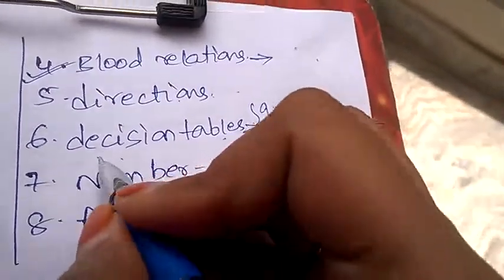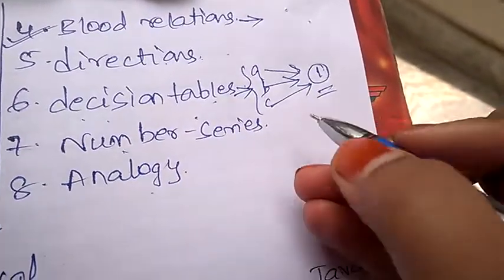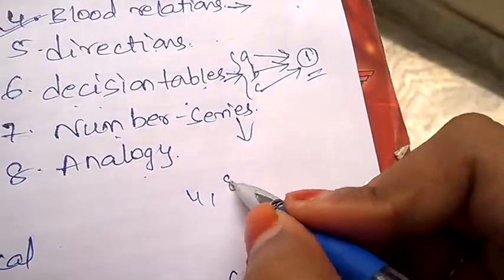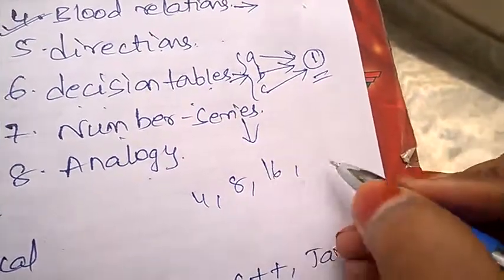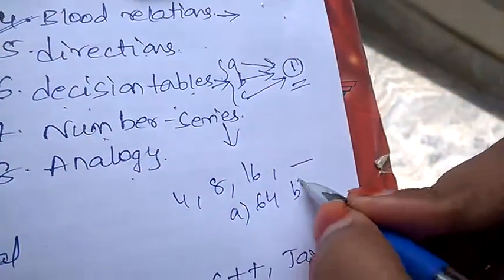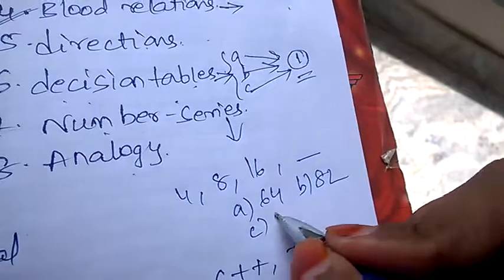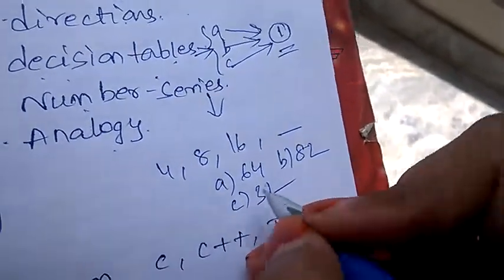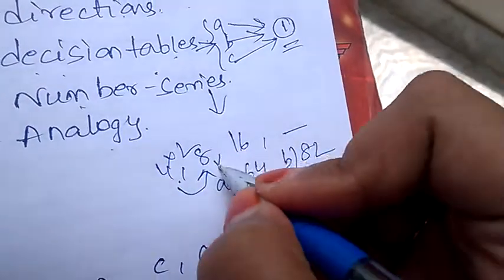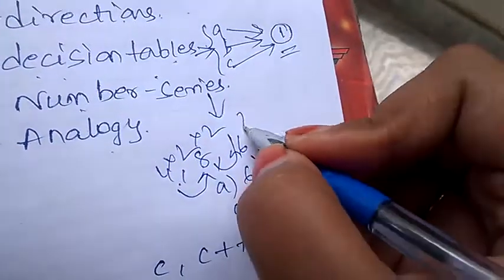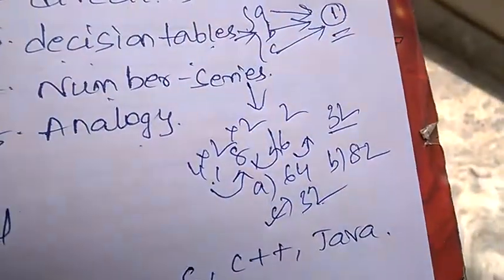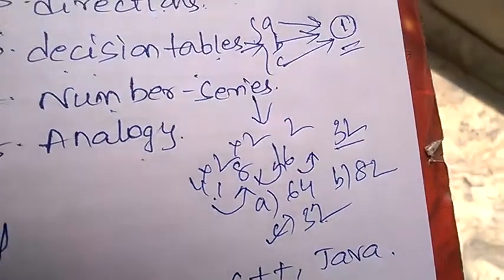Next, number series. You already know examples of number series: 4, 8, 16, what comes here? The options will be like 64, 82, 32. Now we need to use the logic: 4×2=8, 8×2=16, 16×2=32. So C will be the correct answer. Like this you need to use logic and try solving the problems.